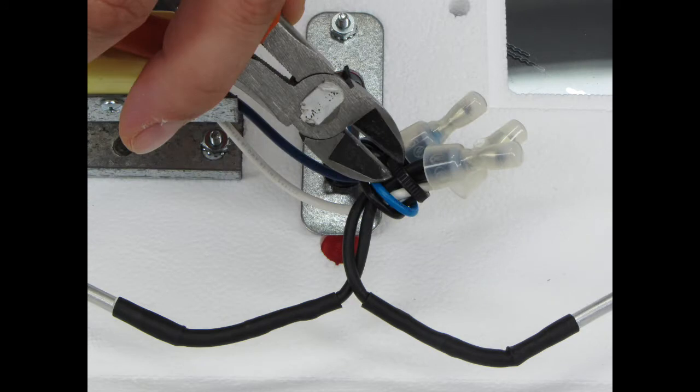First thing you're going to want to do is use the wire snips to cut the zip-tie off of the wire bundle. Make sure to be careful as you don't want to accidentally cut into the wires.